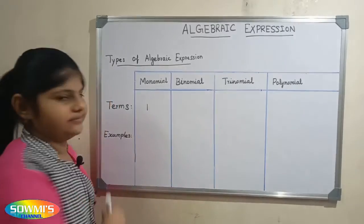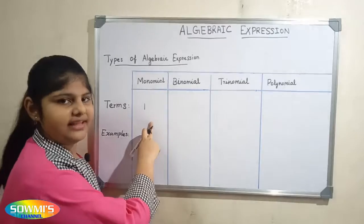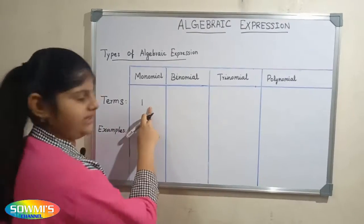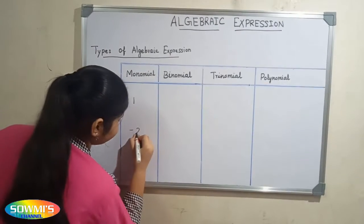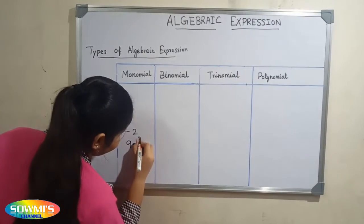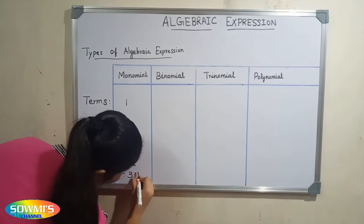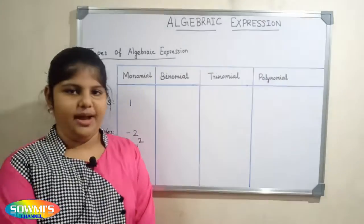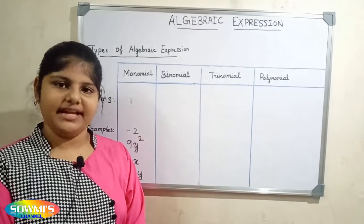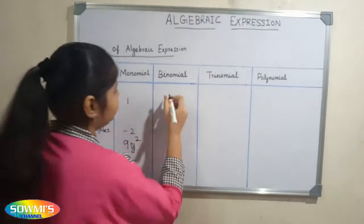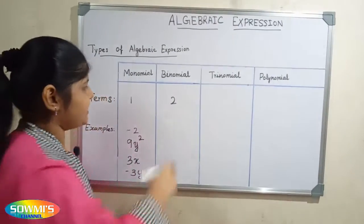First we will talk about monomial. 'Mono' means one, 'nominal' means terms. An algebraic expression that contains only one term is called a monomial. For example: minus 2, 9y squared, 3x, minus 3y, etc. A monomial doesn't have any operator.